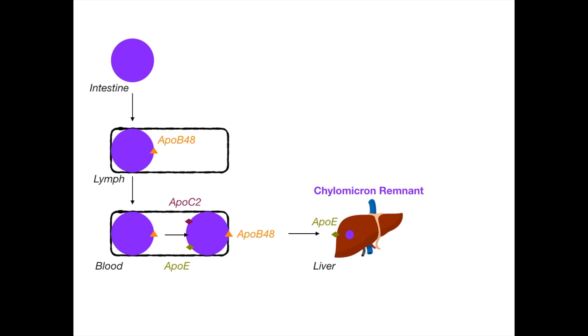Now remember Apo E, Apo eats the remnants. So the gatekeeper in that process is Apo E. So our big purple chylomicron goes to our little baby chylomicron remnant and that remnant goes into the hepatocyte, into the liver to be recycled for this process to continue.